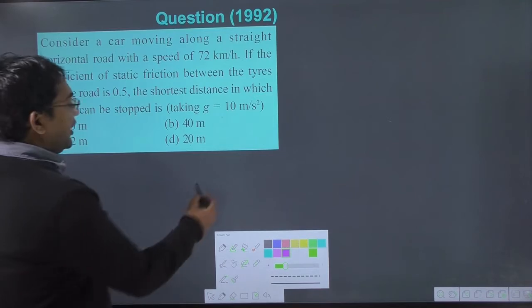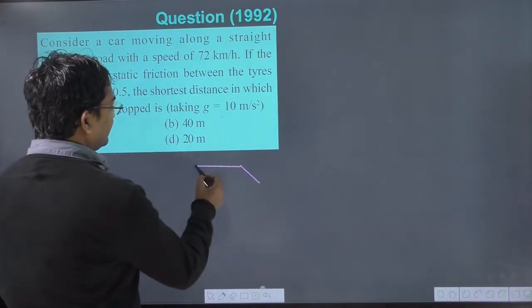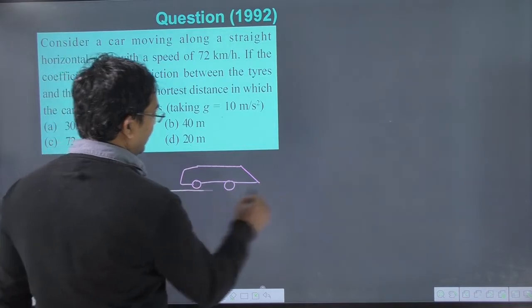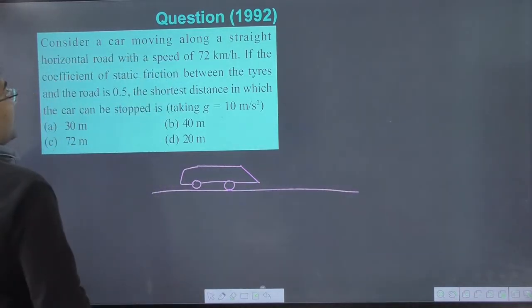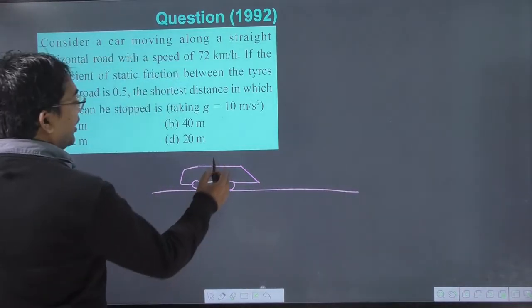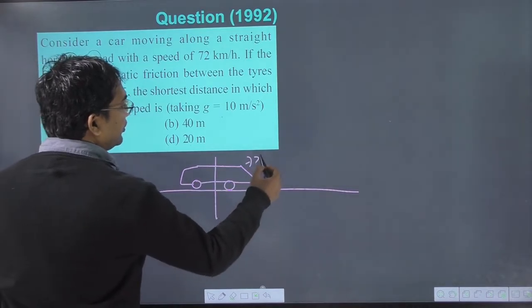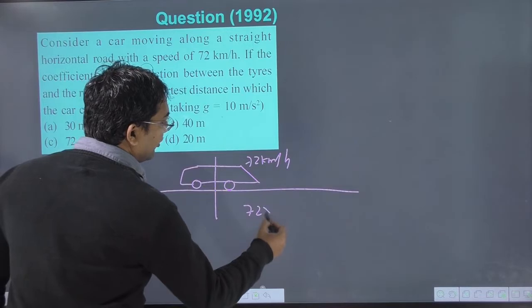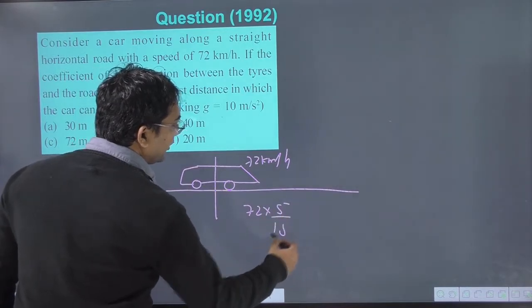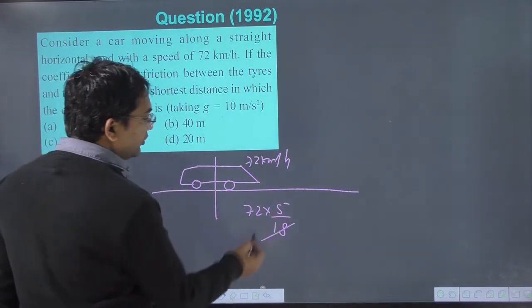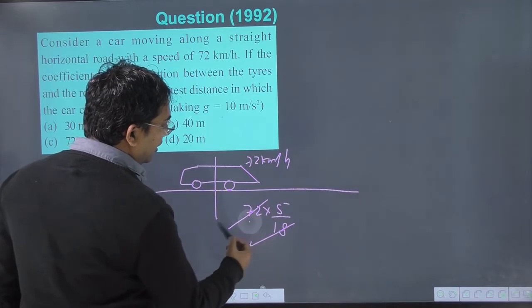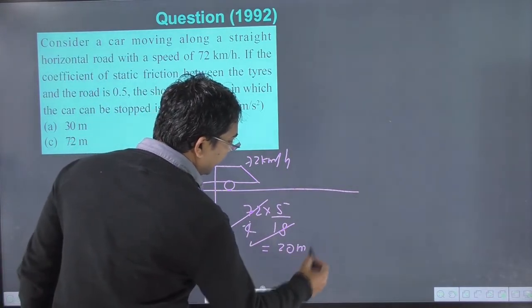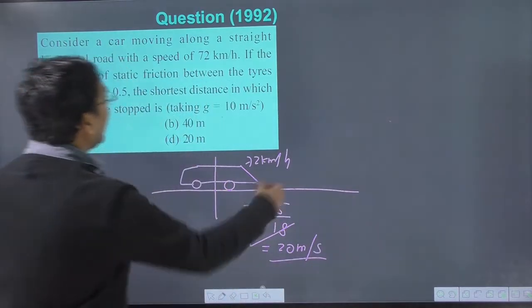So here you can see the car moving at this speed. 72 km per hour, using the conversion factor 5 by 18, equals 20 meters per second. So the car is going at 20 meters per second.